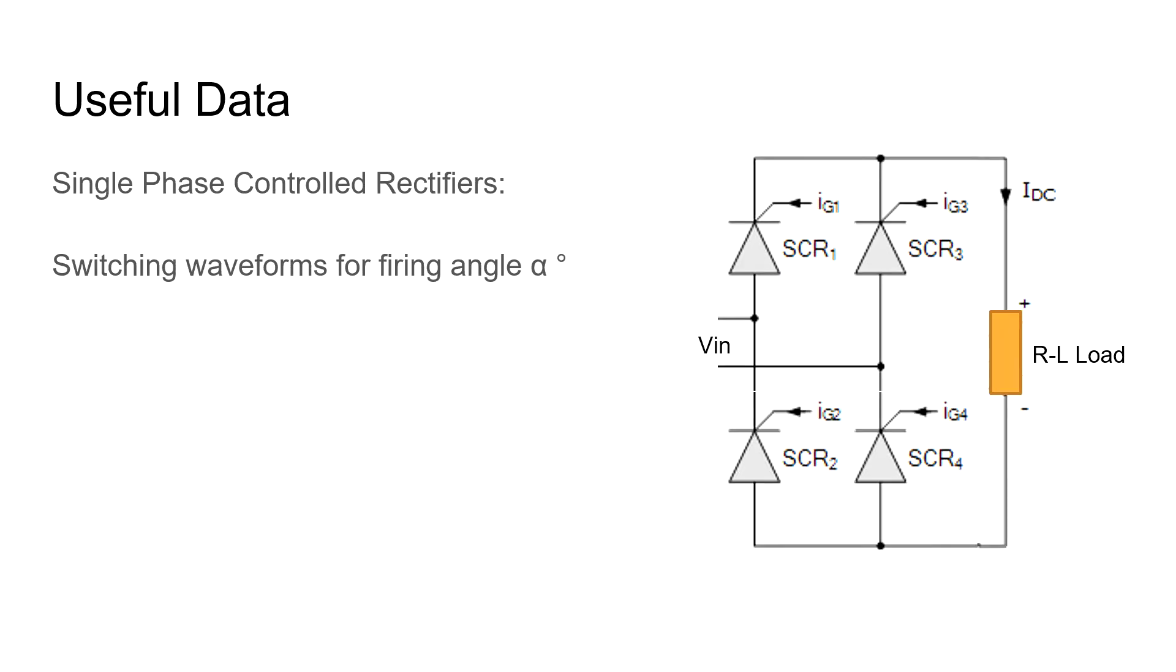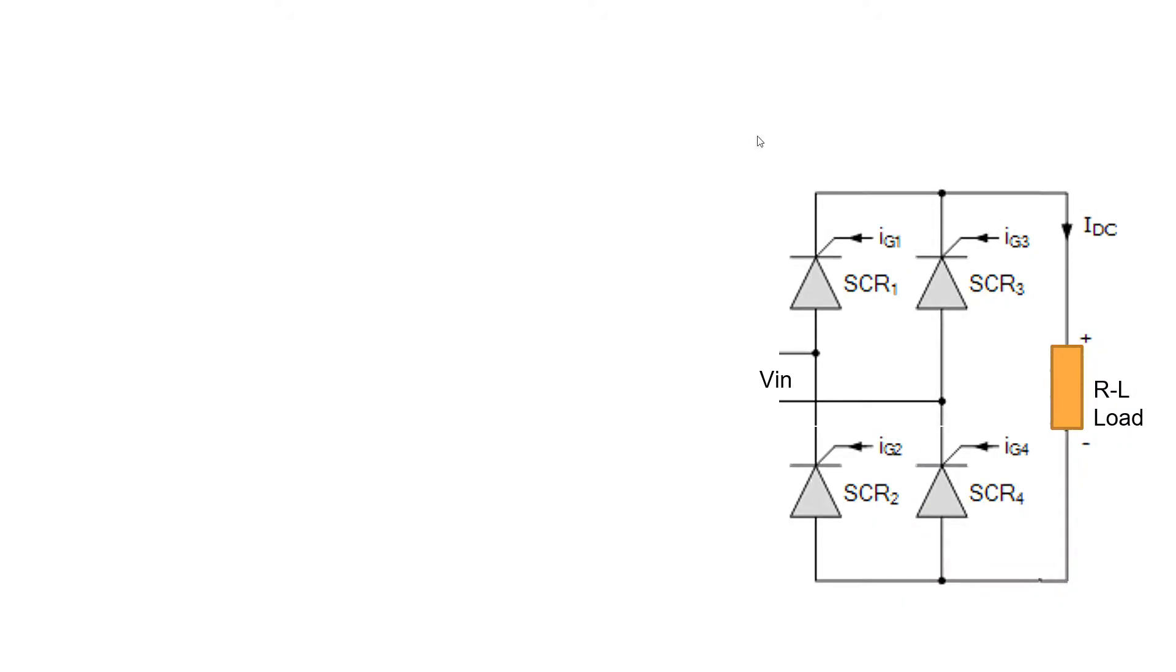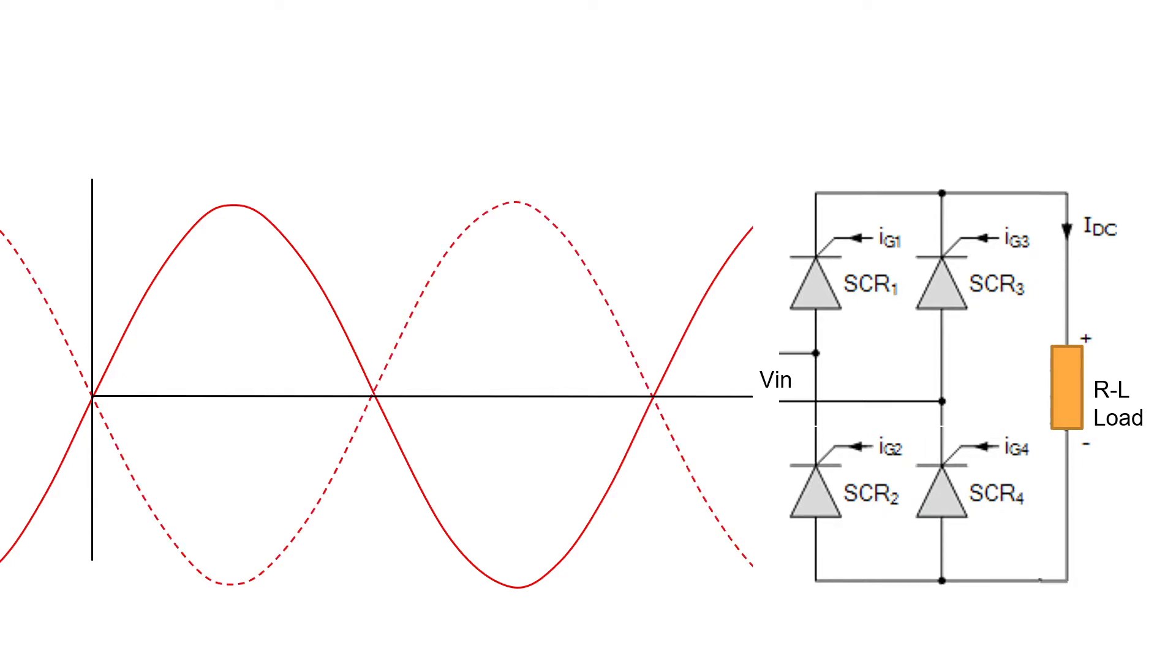Useful data. Let us analyze the switching waveforms for single-phase controlled rectifiers for a firing angle of alpha. This is the V_in supply, sinusoidal wave. This is the negation of the same input supply. The solid black line shows the output current waveform when the thyristors are fired at the firing angle equal to alpha degrees.